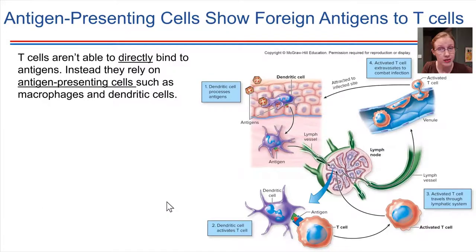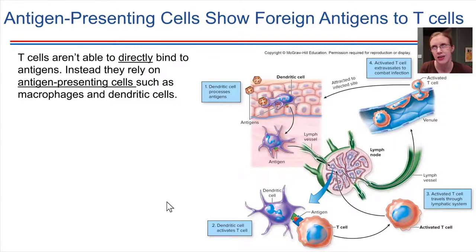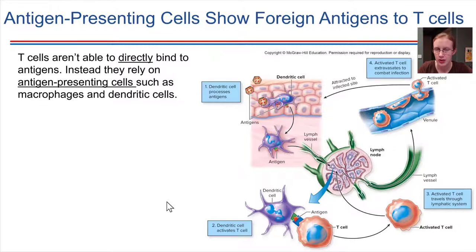However, T cells are not able to bind to pathogens directly — they don't have that capability, unlike B cells. Instead, they have to receive the message from another cell. Specifically, the cells that communicate with T cells are called antigen-presenting cells. Macrophages can be antigen-presenting cells. They are phagocytic — they engulf foreign particles and digest them, then take little pieces from what they've digested and display those fragments on the surface of their plasma membrane. They can then show that fragment to a T cell to activate it.